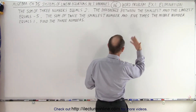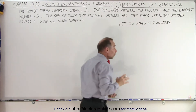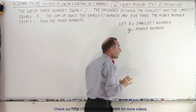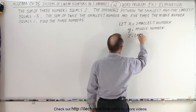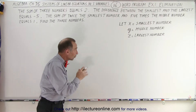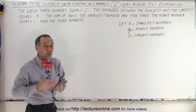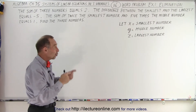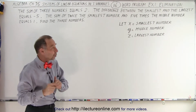So let x equal the smallest number. Then we can let y equal the middle number. And finally, we will let z equal the largest number. Now, in order to solve for these three unknowns, we need to have three relationships in the form of three equations — that's where the term 'three unknowns, three equations' comes from. If you want to solve for the value of x, y, and z, you're going to need three equations.